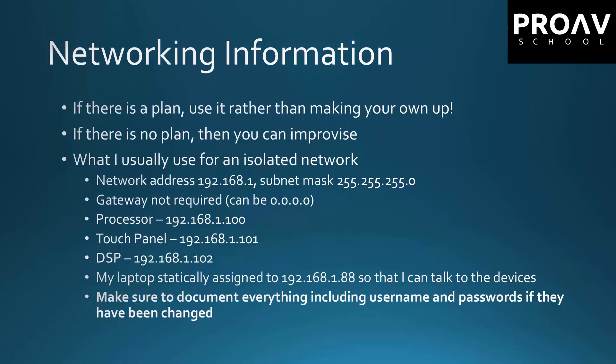What I usually use if it's just an isolated network is the network address of 192.168.1 with a subnet mask of 255.255.255.0. I don't use a gateway address because it doesn't need to get outside to another network. I'll usually put the processor at .100, the touch panel at .101, and if I have a DSP in the system, I'll do it as .102. Those numbers are just personal preference. I usually keep my laptop statically assigned to 1.88 so that I can talk to all the devices. Make sure you document how you've got it set up, and if there are any usernames and passwords that are not the defaults, you should record those as well.